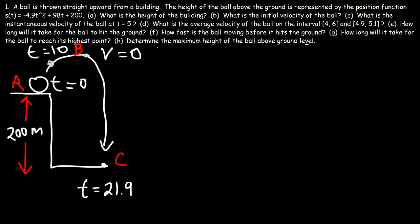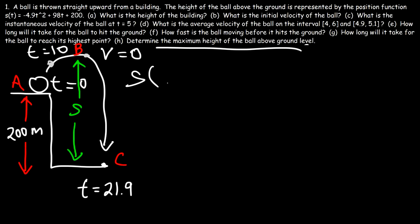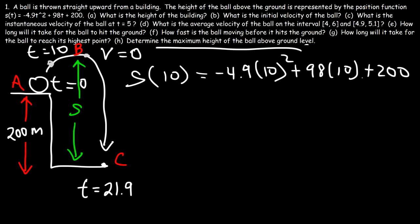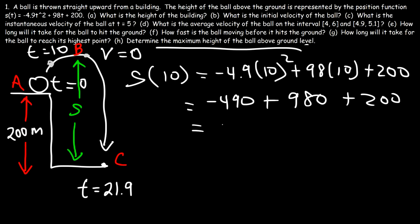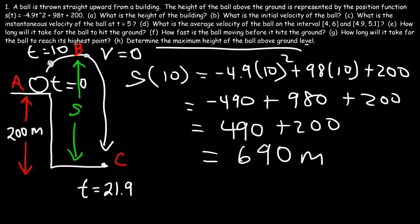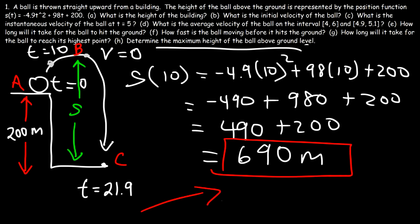Part H: determine the maximum height of the ball above ground level. The maximum height occurs at position B, so we evaluate S when T equals 10: negative 4.9 times 100 plus 98 times 10 plus 200. That's negative 490 plus 980 plus 200, which equals 690 meters. So now you know how to answer questions relating to position functions, average velocity, and instantaneous velocity. Thanks for watching.